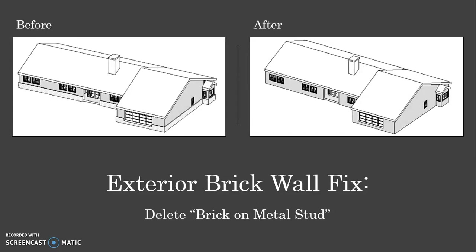For the exterior brick wall, I really didn't like the outer CMU piece that extended along the bottom of the wall because it took away from what my model actually looked like. At first I tried to change the wall to a different wall with just brick, but then I realized I could just delete the CMU part and leave the brick. By clicking the edit type button in the properties panel, what was left was the brick on metal stud, which ended up being a better representation of my model.